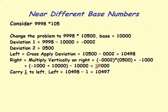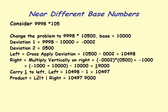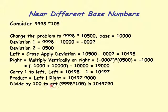Keeping 4 digits on the right, the leftmost carry digit negative 1 moves to the left: 10498 minus 1 equals 10497. The product so far is 10497|9000. Dividing by 100, the two trailing zeros disappear, giving the final answer: 9998 times 105 equals 1,049,790.